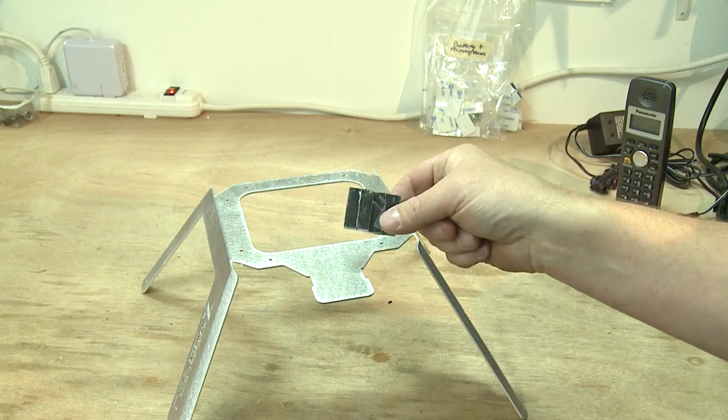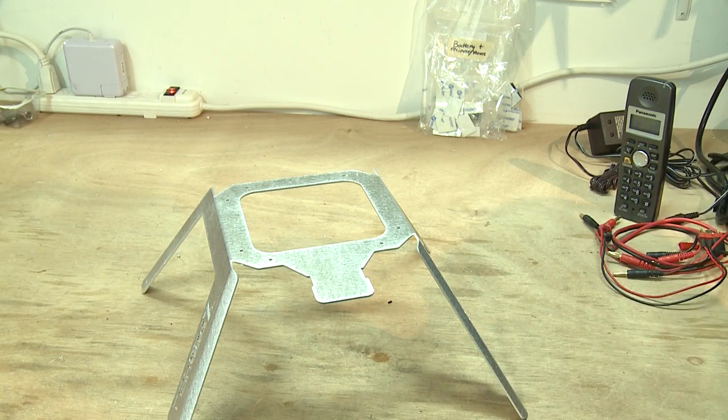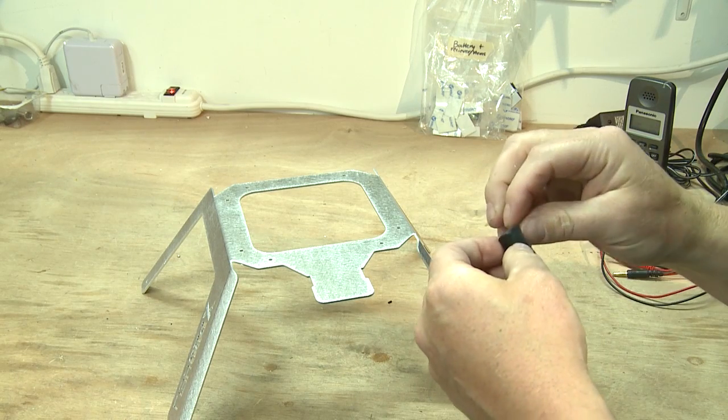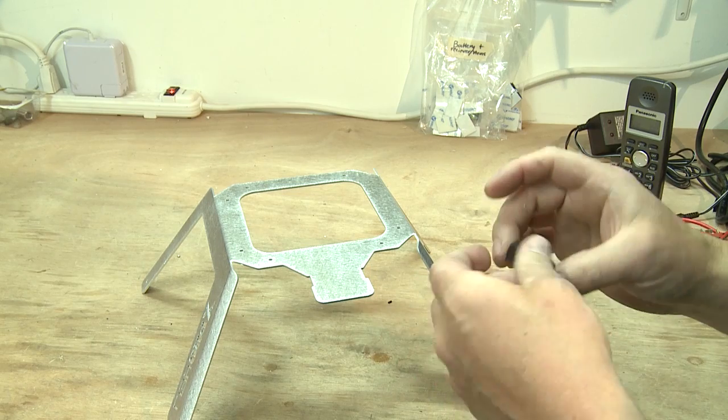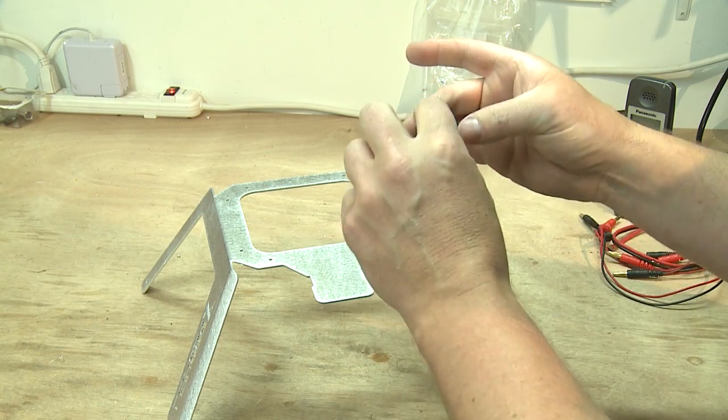We're going to talk about installing these rubber pads. They're pretty self-explanatory as far as what they do - they are a vibration dampening system. When you do install them, you want to install them so that the tall side, there's like a skinnier side and a taller side, you want the tall side to be up.